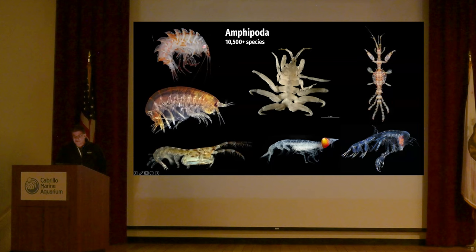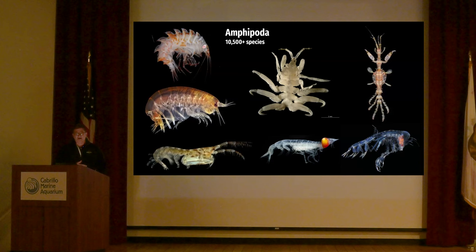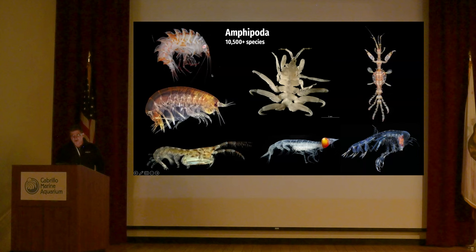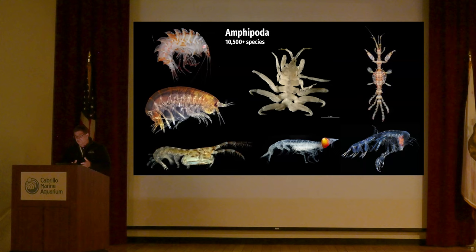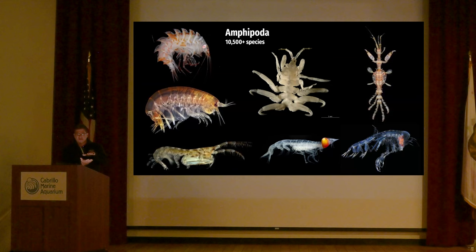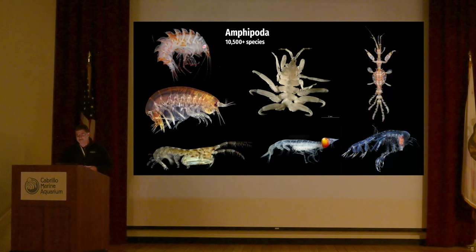The subject of our talk tonight is in the center of that image. Most amphipods are laterally compressed — side to side. But whale lice are more like the isopod-related group where they're dorsoventrally flattened. When you think about these guys being on whales, dolphins, and porpoises cruising through the sea, it makes sense that they have a low profile. They also have features that aid in attachment to the host, which we'll take a look at.